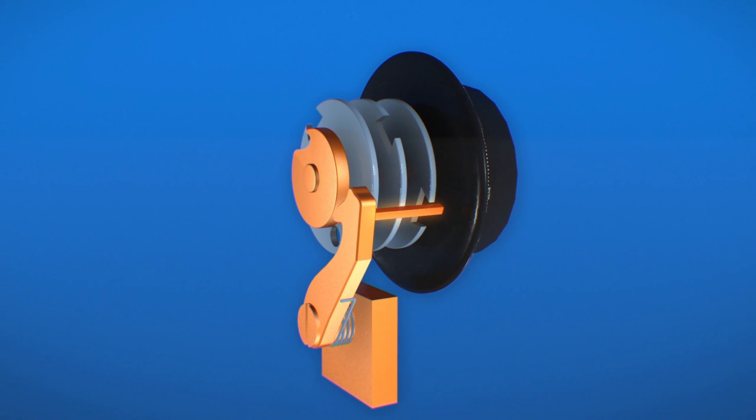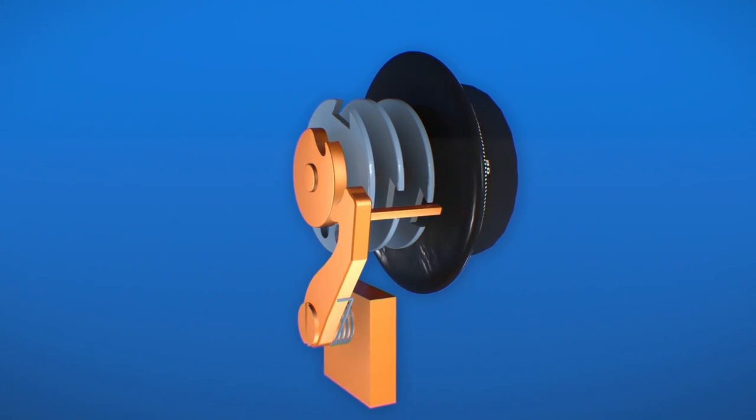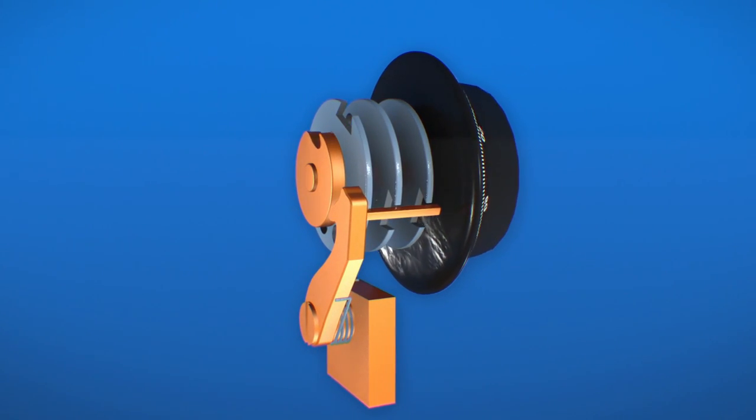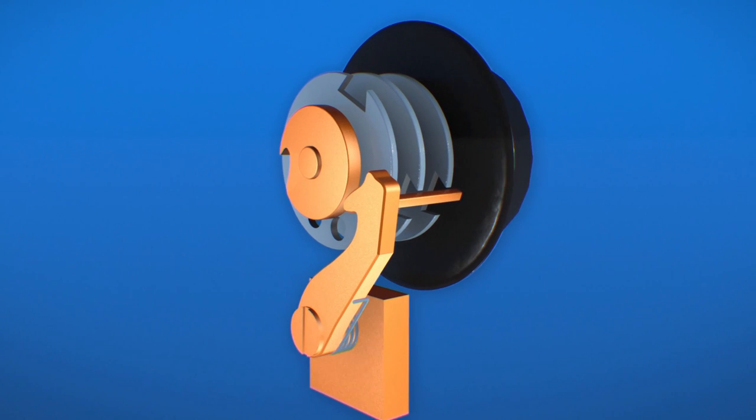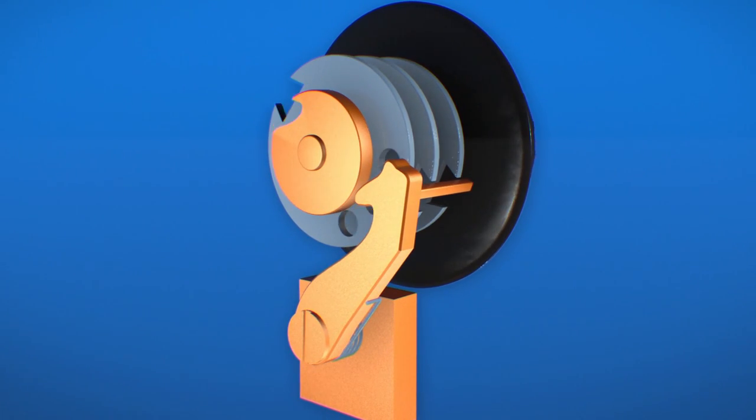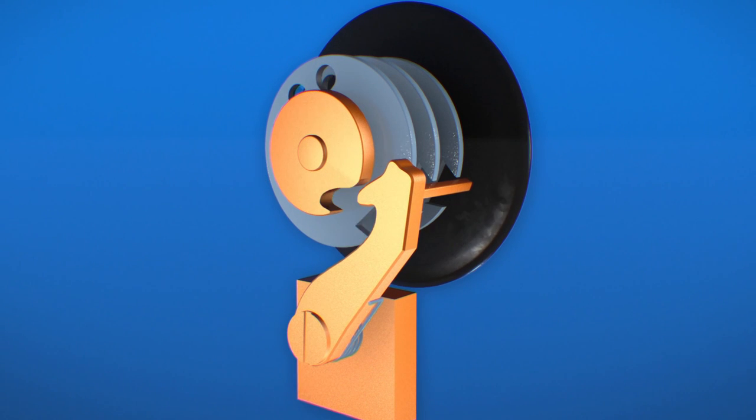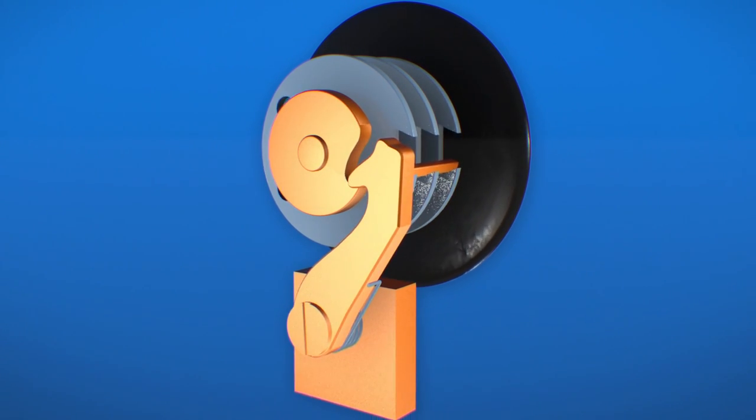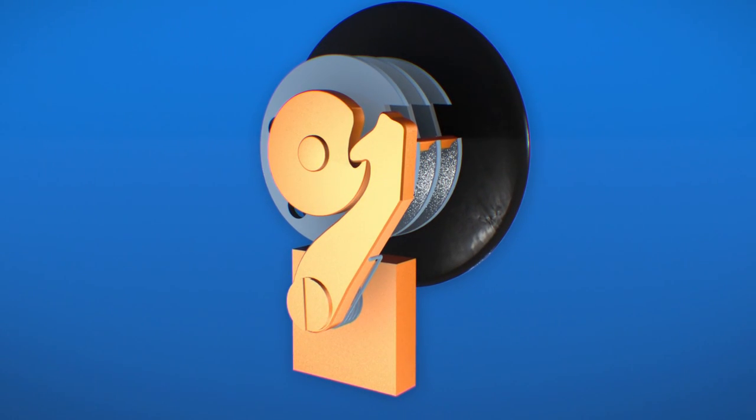Turning the dial first left, then right, then left again, according to the combination, lines up the wheel gates. When the correct numbers have been dialed in the correct order, the fence falls into place. The lever engages with the drive cam. And hey presto, the lock can now be opened.